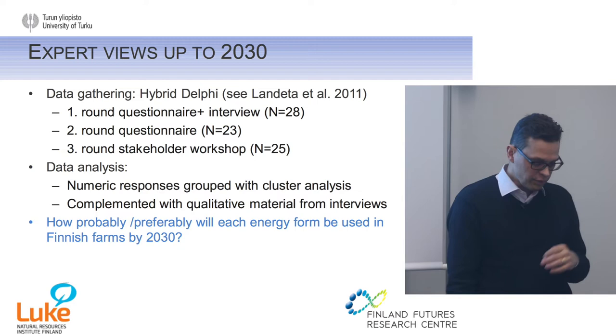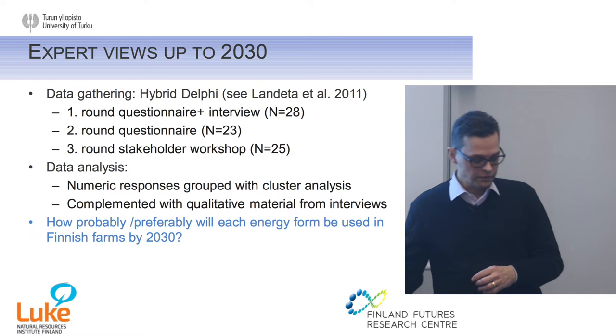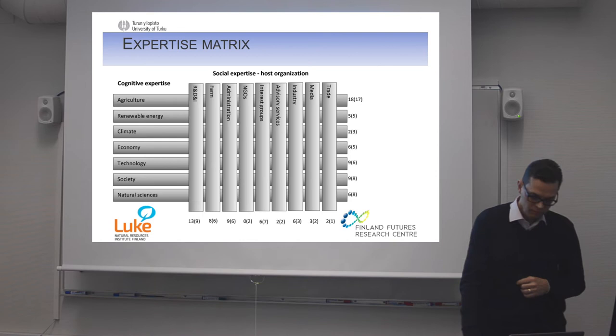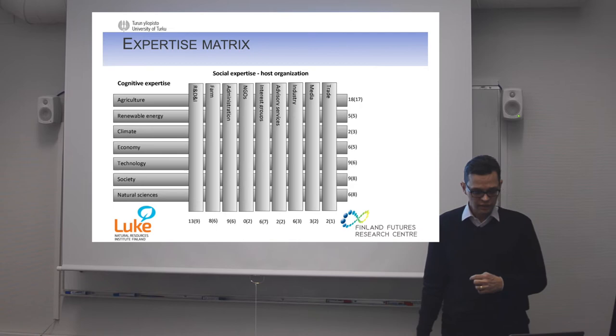The question now is: how probably or preferably will each of the energy forms — we have 11 energy forms — be used in Finnish farms by 2030? Now this is the criteria for choosing the experts: the expertise matrix.